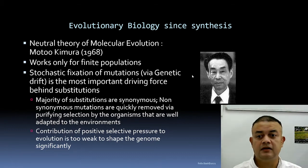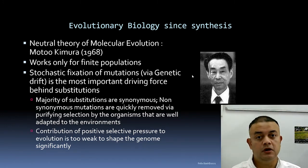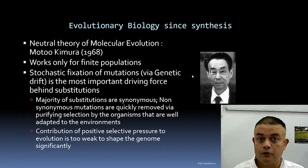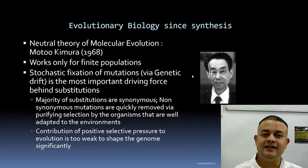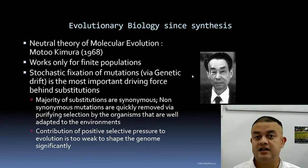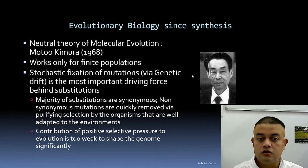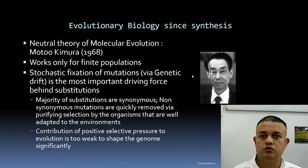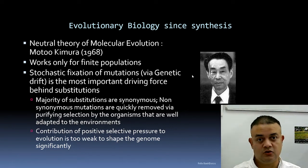In brief, the neutral theory is about stochastic fixation of mutations — stochastic means random. Kimura was a trained mathematician who later took botany during his MSc program at Kyoto University. The core idea is that stochastic fixation of mutations by genetic drift is the most important driving factor behind substitution — drift plays more of a role than selection.